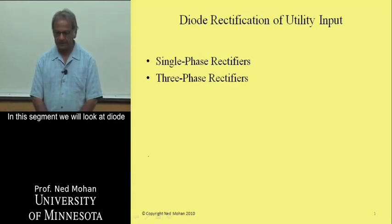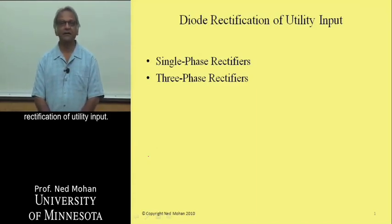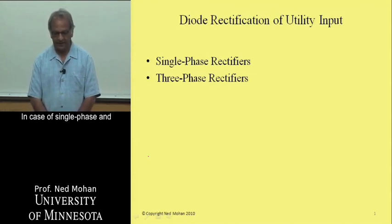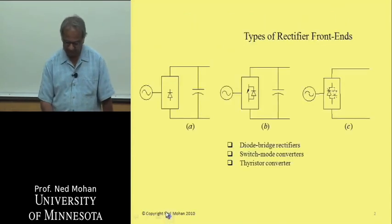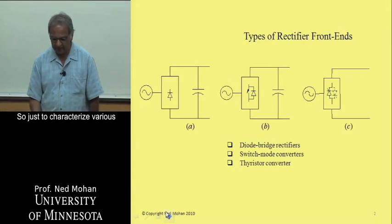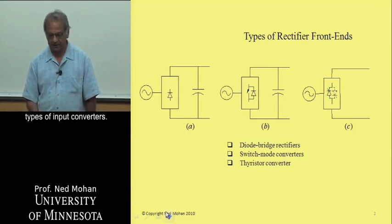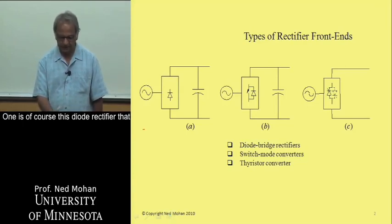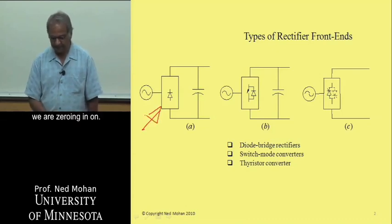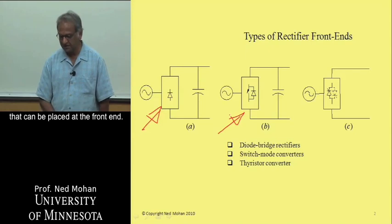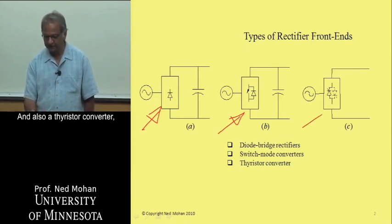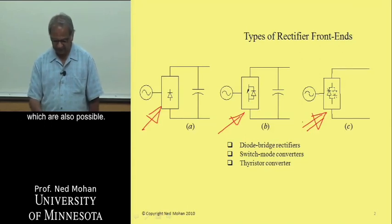In this segment, we will look at diode rectification of utility input in case of single phase and three phase by rectifier circuits. To characterize various types of input converters, one is of course this diode rectifier that we are zeroing in on. Then we have switch mode converters that can be placed at the front end and also thyristor converters, which are also possible.